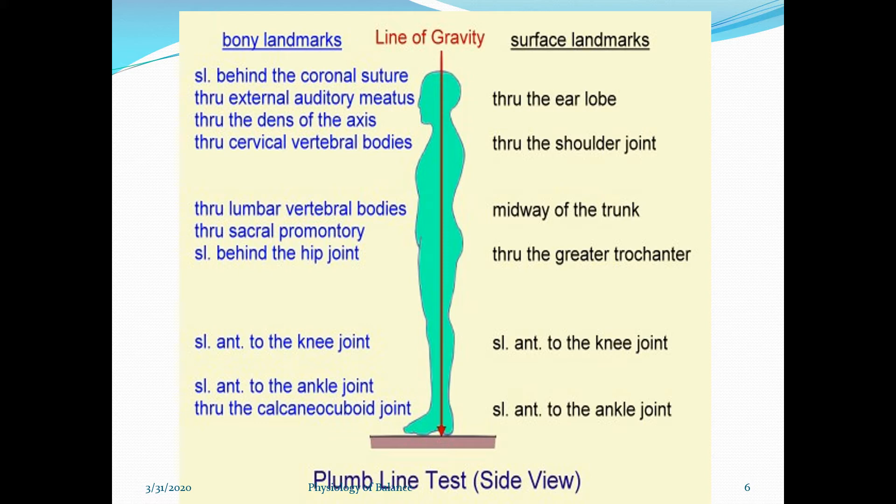The plumb line passes through the ear lobe, through the shoulder joint, midway of the trunk, through the greater trochanter, slightly anterior to the knee joint, and slightly anterior to the ankle joint. These are the surface landmarks.